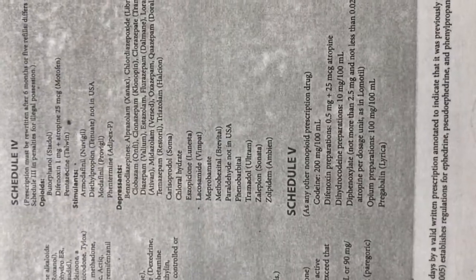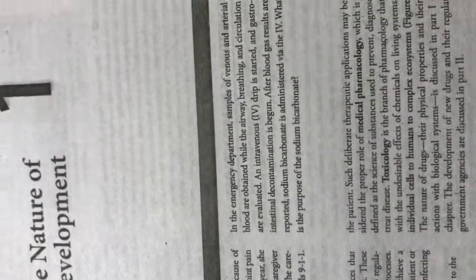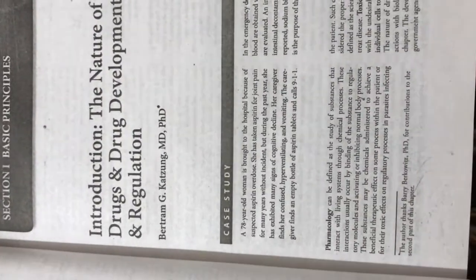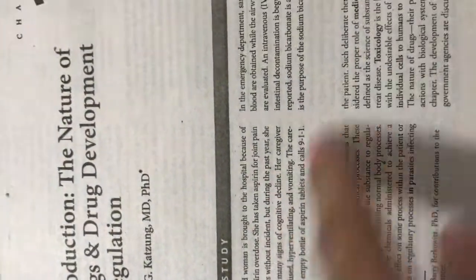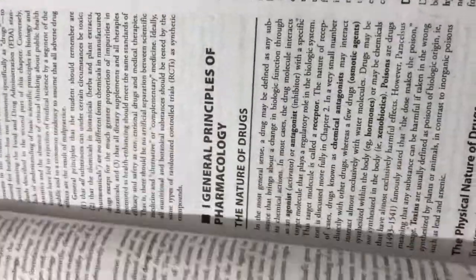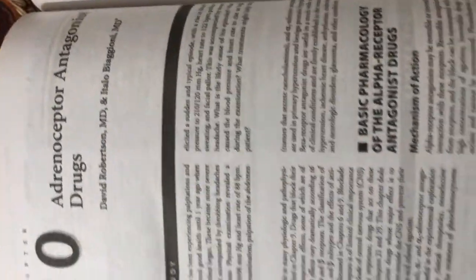Schedule five also involves codeine at 200 milligrams per 100 milliliters. Then we move to the book content itself — basic principles, introduction, the nature of drugs and drug development regulation. In every chapter there is first a case study, then the pharmacology is introduced, followed by basic physiology of the relevant organ, then the pharmacology and clinical uses and indications of that drug, and the adverse effects of the medicines.